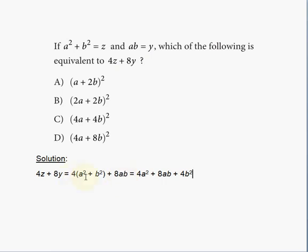Now when you distribute this and combine it into a simpler form of three terms, you will have 4a squared plus 4b squared because you apply the 4 to each of these terms. So when you combine everything, you will have 4a squared plus 8ab plus 4b squared.